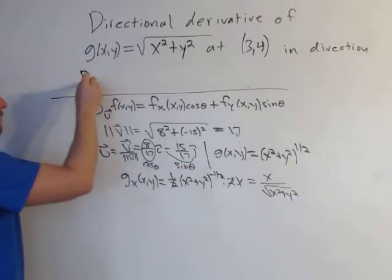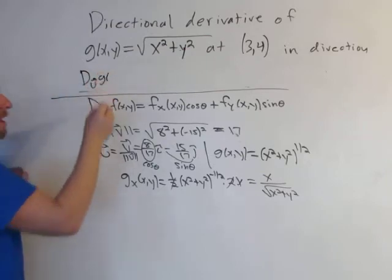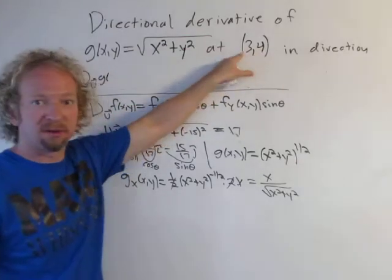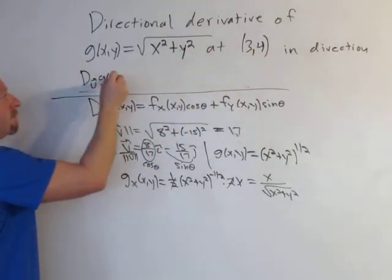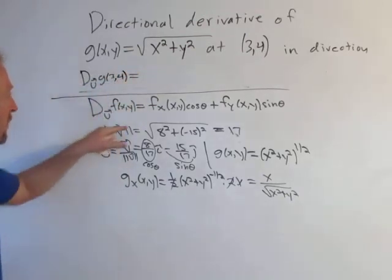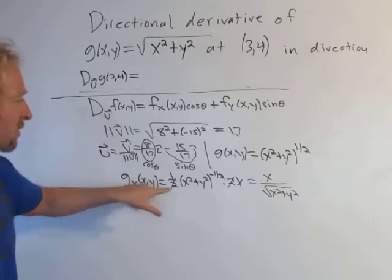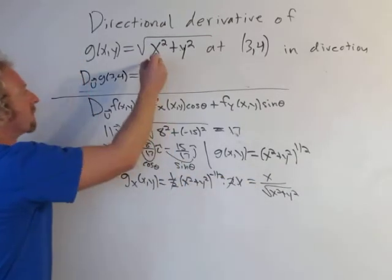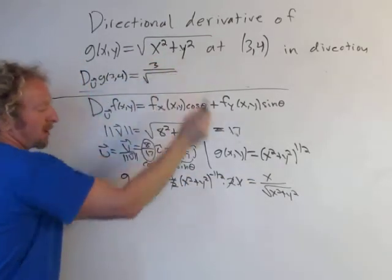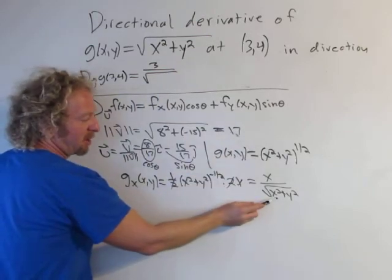Okay alright so let's write it out. So du of g at this it's going to be at 3, 4. So the partial at 3, 4, so that's this guy here. So x is 3 and y is 4. So we get 3 squared plus 4 squared.